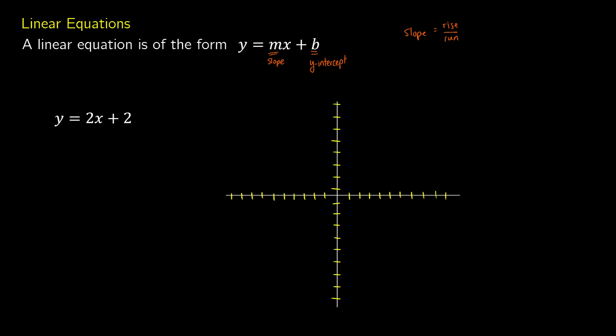I'd like to show an example here. y is equal to 2x plus 2. What we can do is make a little chart of x and y values for graphing. We're going to choose x equals negative 2, negative 1, 0, 1, and 2.